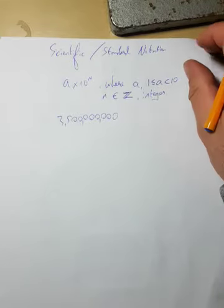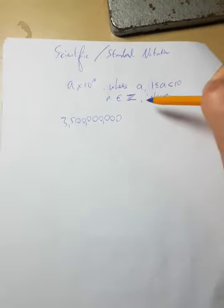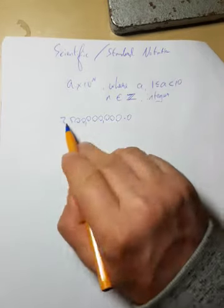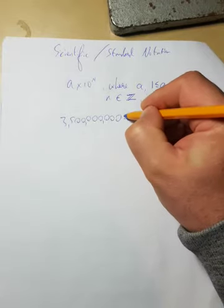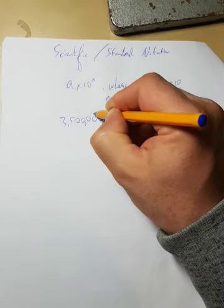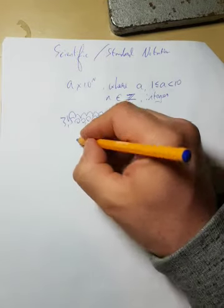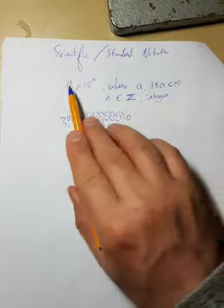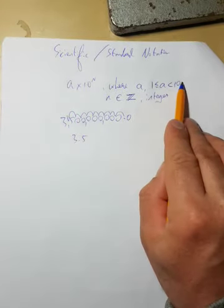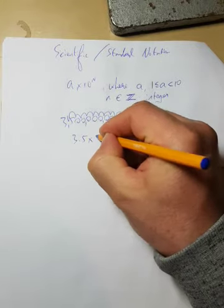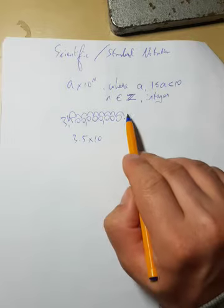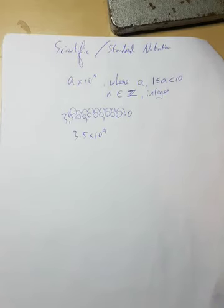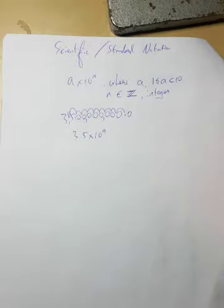So we have this number here — about three and a half billion. To write it in scientific notation, I move my decimal point until it's right after the first number. That's one, two, three, four, five, six, seven, eight, nine places. So it becomes 3.5 — which is between 1 and 10 — times 10 to the power of 9. That's it, it's that simple.